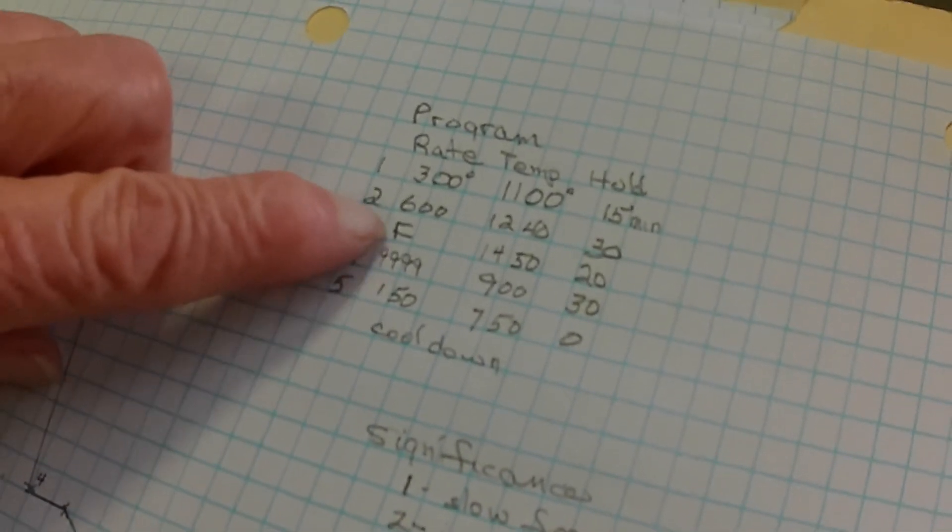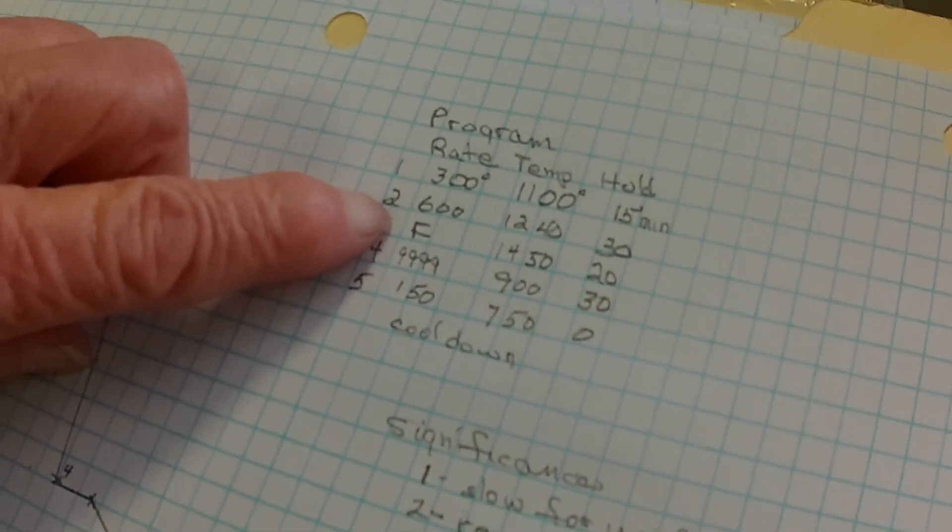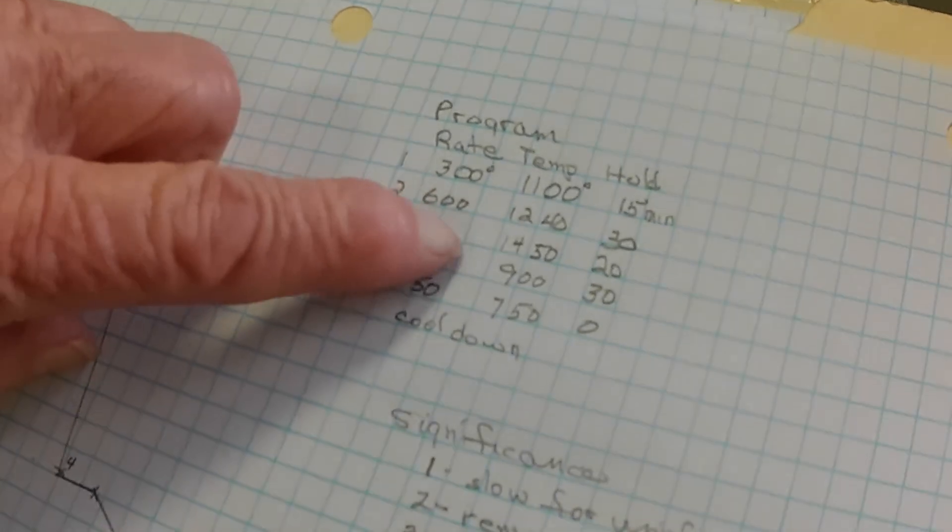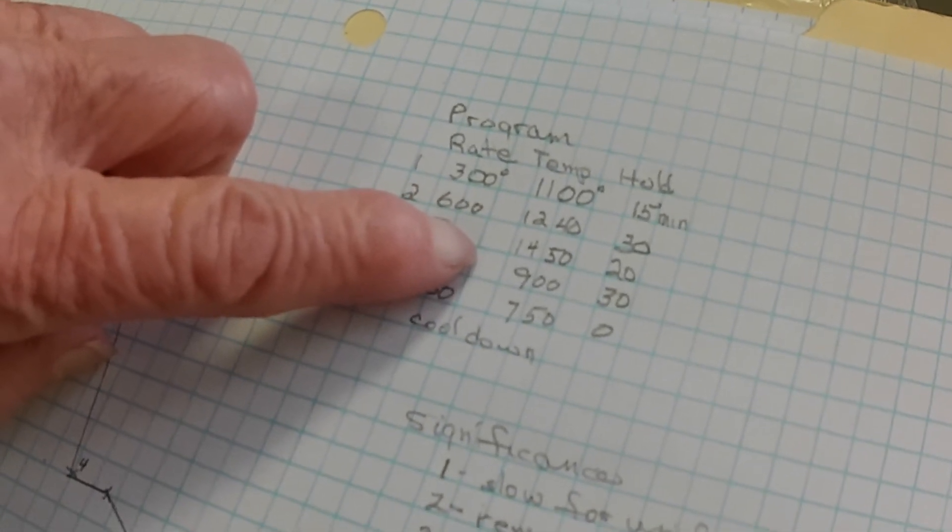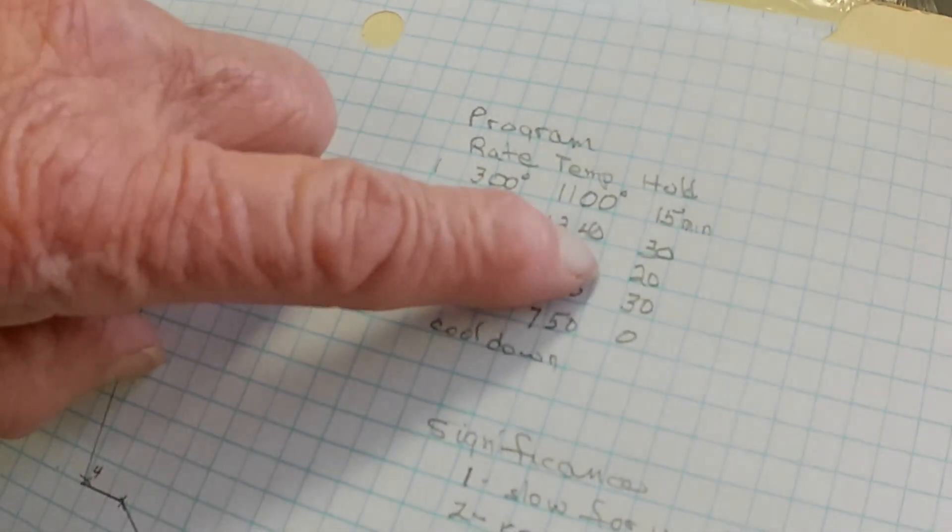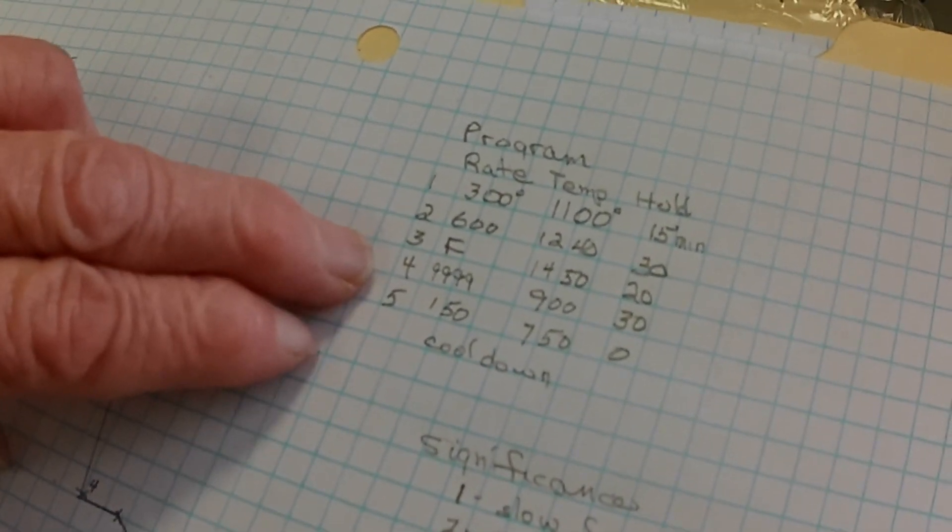The third is full. Remember, 9999. And we go to 1450 which is our fusing point and we're going to hold it for 20 minutes to get it to smooth out.